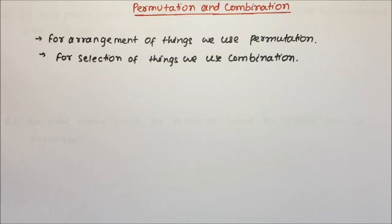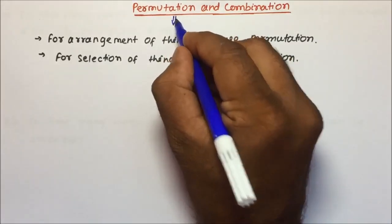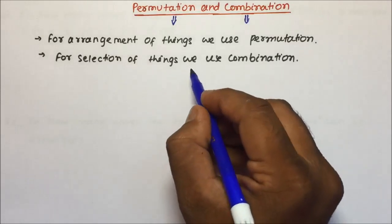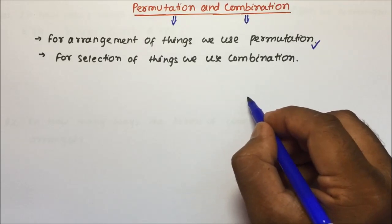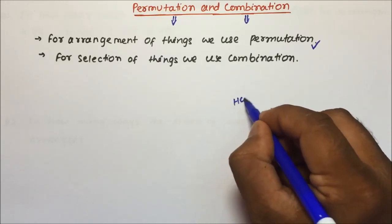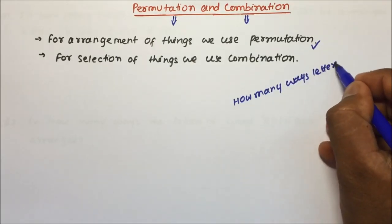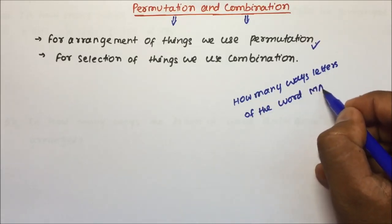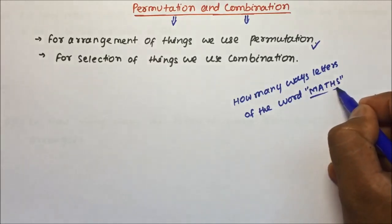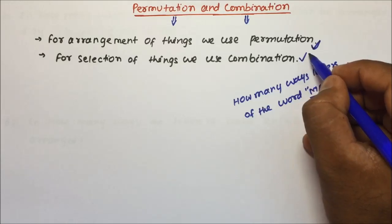So let us start with the concept, and followed by that we will be solving few problems. Now, what is the concept in permutation and combination? These are two different words. Permutation is used for arrangement of things. You may get a question like: how many ways can the letters of the word MATHS be arranged? So wherever you see arrangement, that is permutation, and wherever you see selection, that is combination.